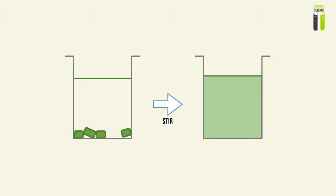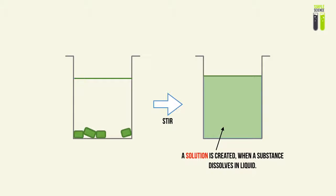Here we have two states, where we introduce a substance into a liquid and through a physical process such as stirring — not a chemical process — we are able to dissolve the substance into the liquid. What we have created is basically a solution. A solution results when we dissolve a substance into a liquid.